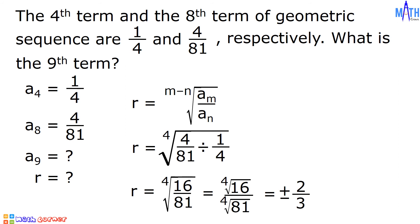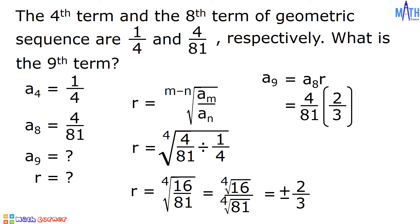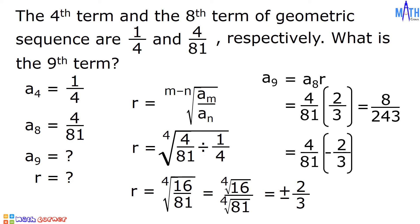After finding the common ratio, let us find the 9th term by multiplying the 8th term by R. If R is positive 2/3, then A sub 9 equals 4/81 times 2/3: 4 times 2 is 8, and 81 times 3 is 243, giving 8/243. If R is negative 2/3, then A sub 9 equals 4/81 times negative 2/3, which equals negative 8/243.